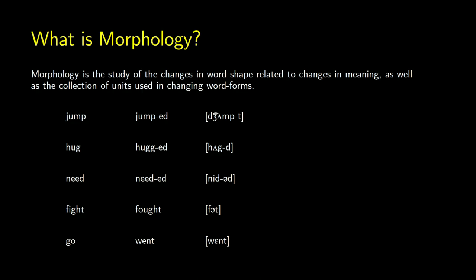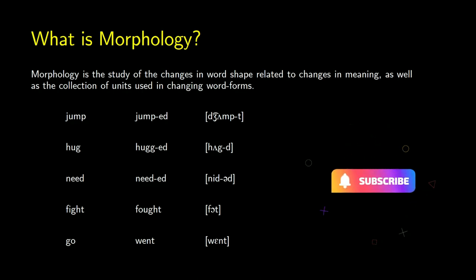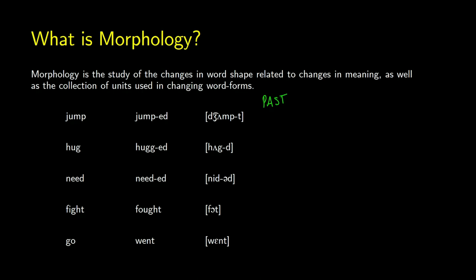For example, you might think about learning about the past tense in English. So how would you do the past tense? Well, in a word like jump, you could add the spelling 'ed', but in pronunciation, that's being pronounced as a 't' — jumped.